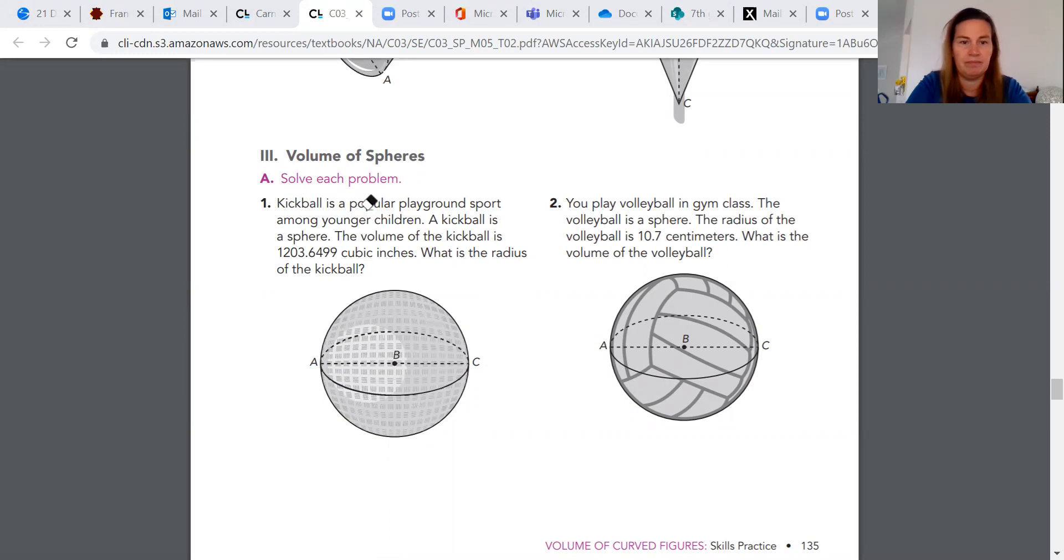I'm going to leave the formula here. So we have volume equals 4/3 times 3.14 times radius to the third. Now they're giving us what the volume is. So when they give us the volume, we're going to substitute in that 1,203.6499 cubic inches for my volume. That equals 4/3 times 3.14 r to the third.